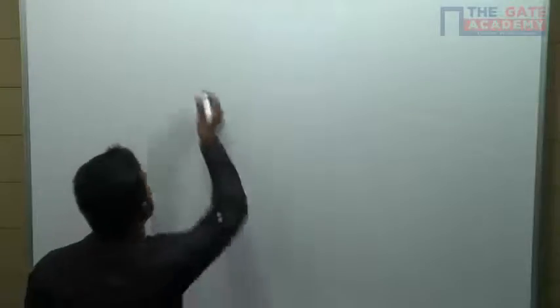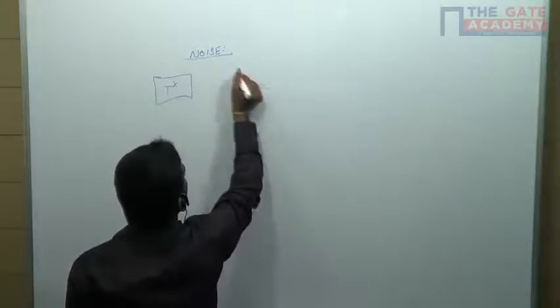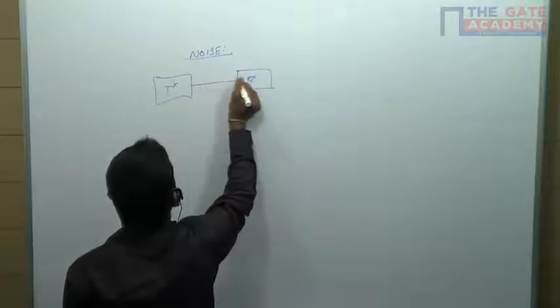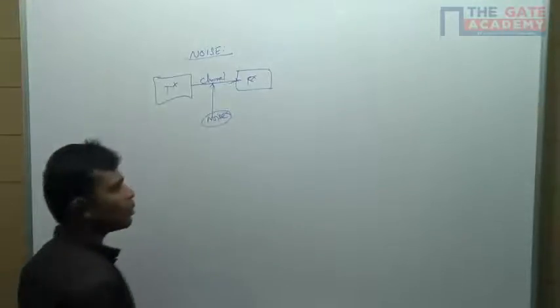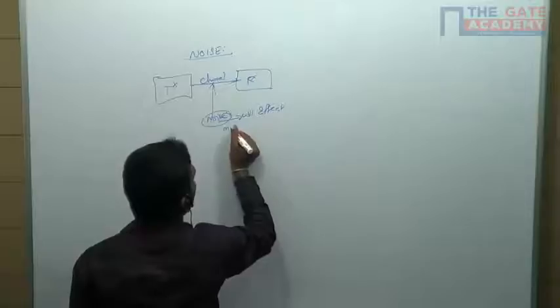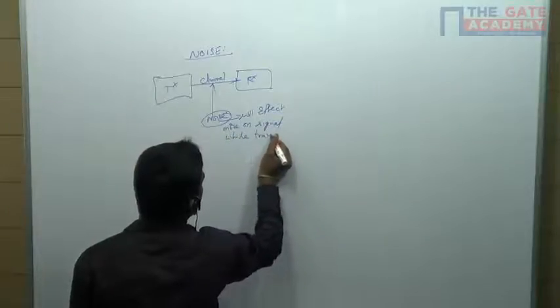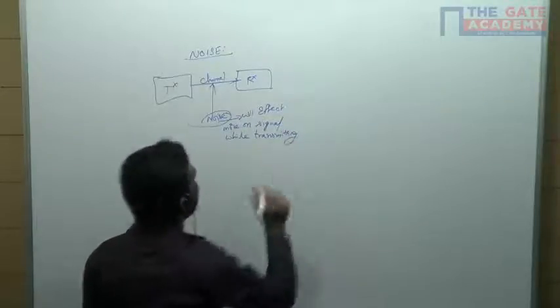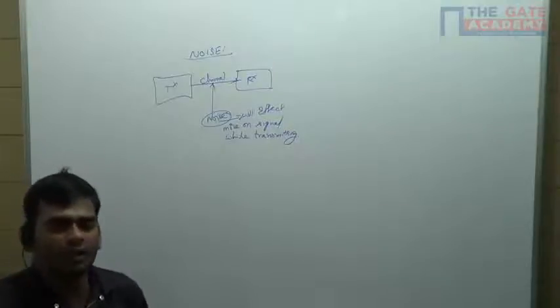Today we are going to see about noise — this is the last topic. Generally, we have a transmitter on one side and a receiver on the other side, with a channel in between. Noise affects the signal most during transmission through the channel. We will define noise, look at its types — internal and external — and how noise varies for different modulation techniques.